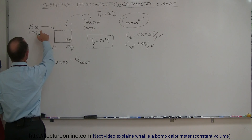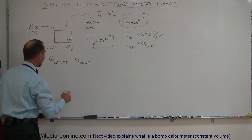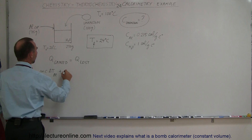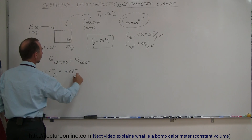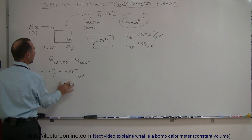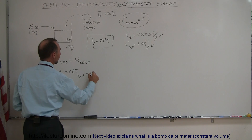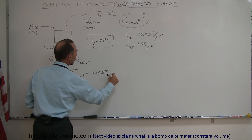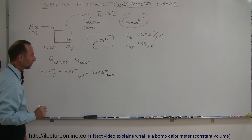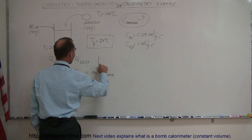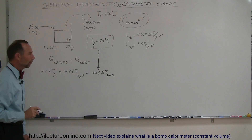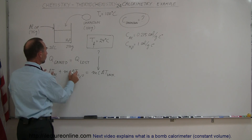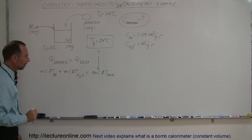So what is gaining heat? The aluminum is gaining heat, and the heat gained by something can be written as M·C·ΔT for the aluminum, plus the heat gained by the water, which is M·C·ΔT for the water. That must equal M·C·ΔT — the heat lost by the unknown. What we're looking for is the C of the unknown — the specific heat. Everything else is known: the masses of all three, the specific heats of the aluminum and water, and the ΔT for each of the three objects involved in this heat exchange.